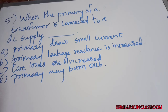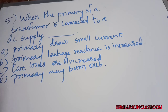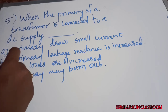Fifth question: when the primary of a transformer is connected to a DC supply, what will happen? Options: (A) primary draws small current, (B) primary leakage reactance is increased, (C) core losses are increased, (D) primary may burn out. The answer is (D). DC produces a steady flux, so no EMF is induced, resistance is low, current increases, and the primary may burn out.